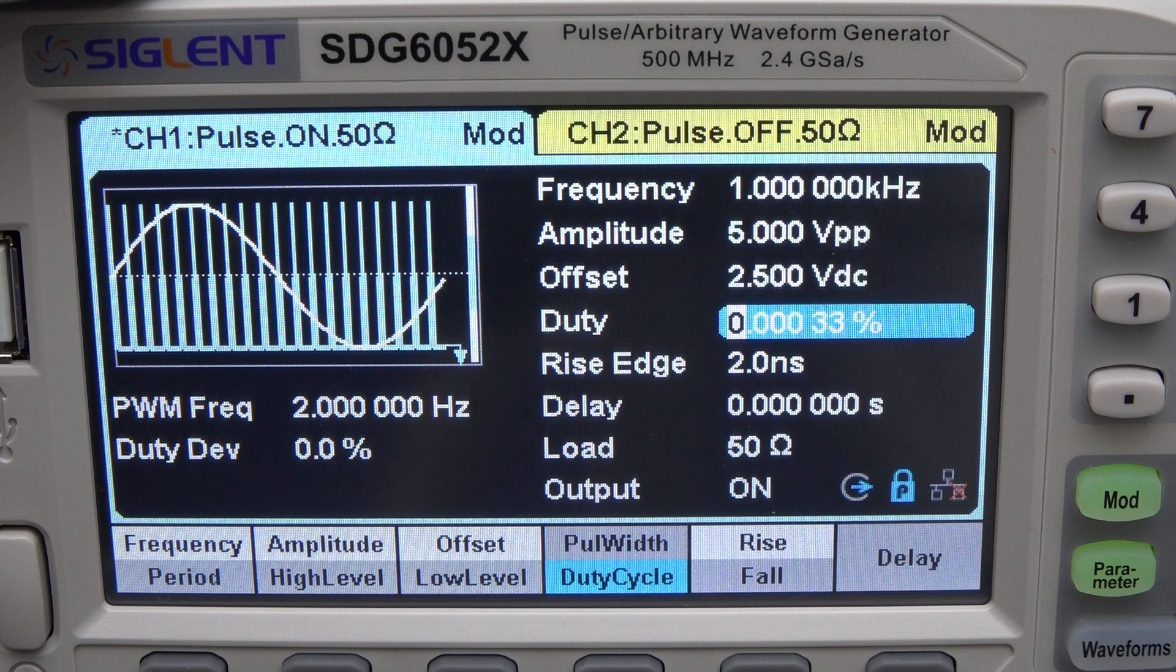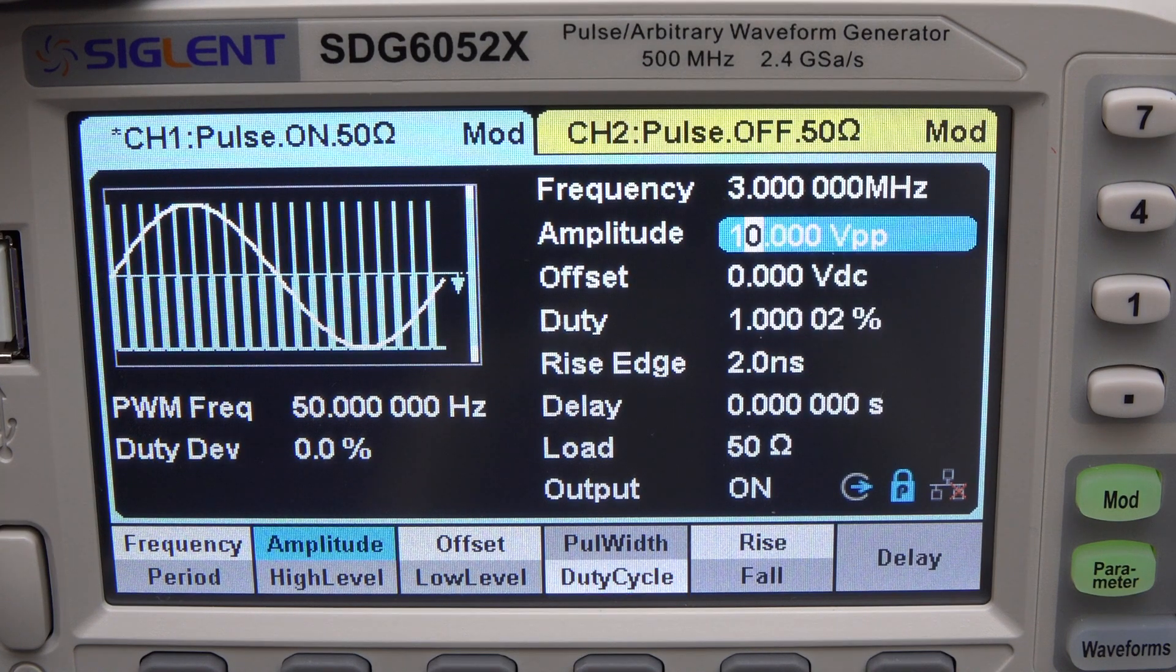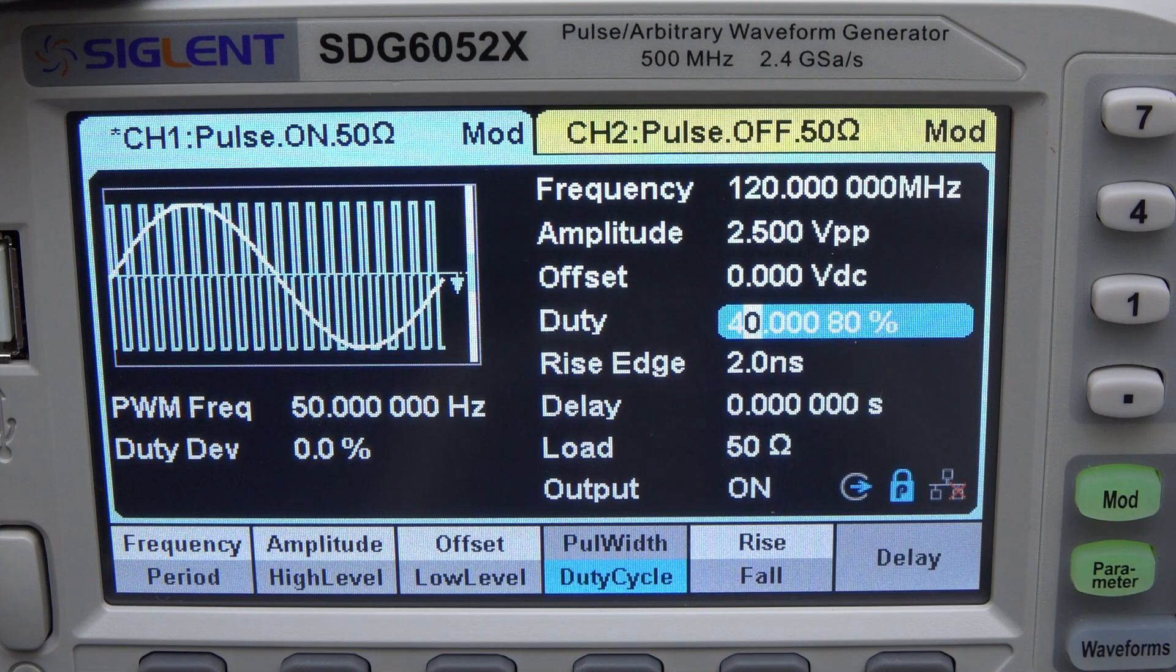In terms of duty cycle limitations, this depends on the frequency you're using. At low frequencies you can get way below 1%. At 3MHz you can just barely get 1-99%. And by the time you get up to 120MHz, you're limited from 40 to 60. I can't imagine this being a problem for anyone, and overall I'm very happy with the PWM and sweeping capabilities of the unit.